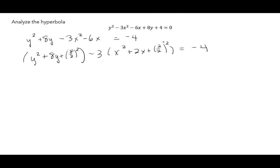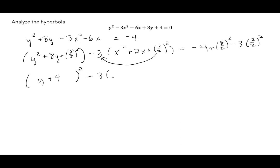We completed the square but we have to balance. I added (8/2)² to the left, so I do the same on the right. For the x term, don't forget that -3 in front — write minus 3 times (2/2)². The y² + 8y + (8/2)² becomes (y+4)², and -3 times (x² + 2x + (2/2)²) becomes -3(x+1)². On the right: -4 + 16 - 3(1) = 9.